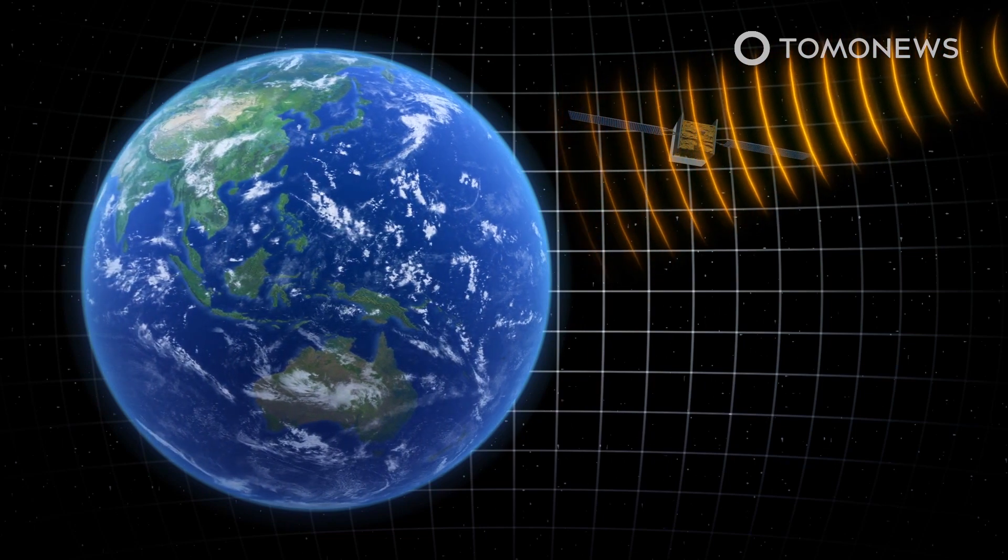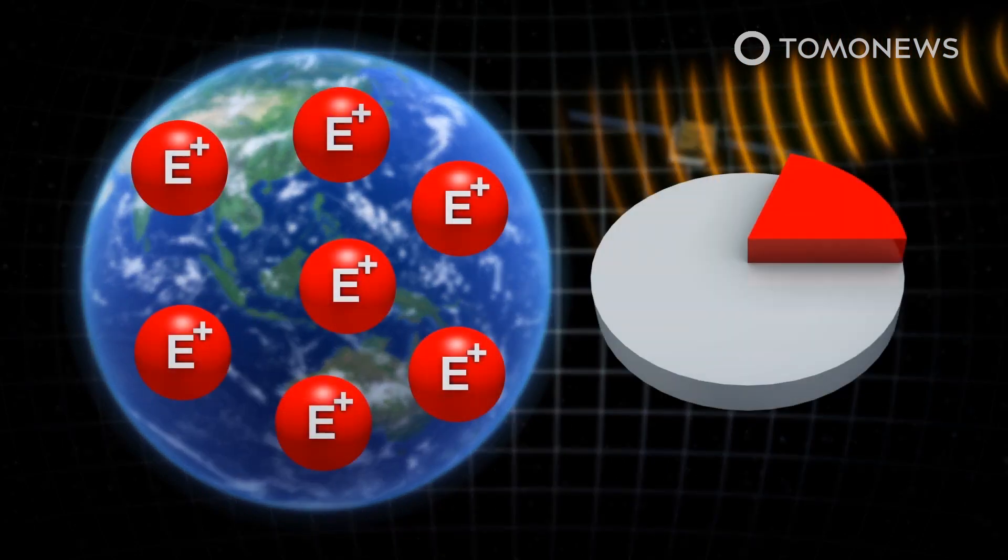According to the study's co-author, Sylvia Manconi at Aachen University, the pulsar contributed about 20% of positrons detected near Earth.